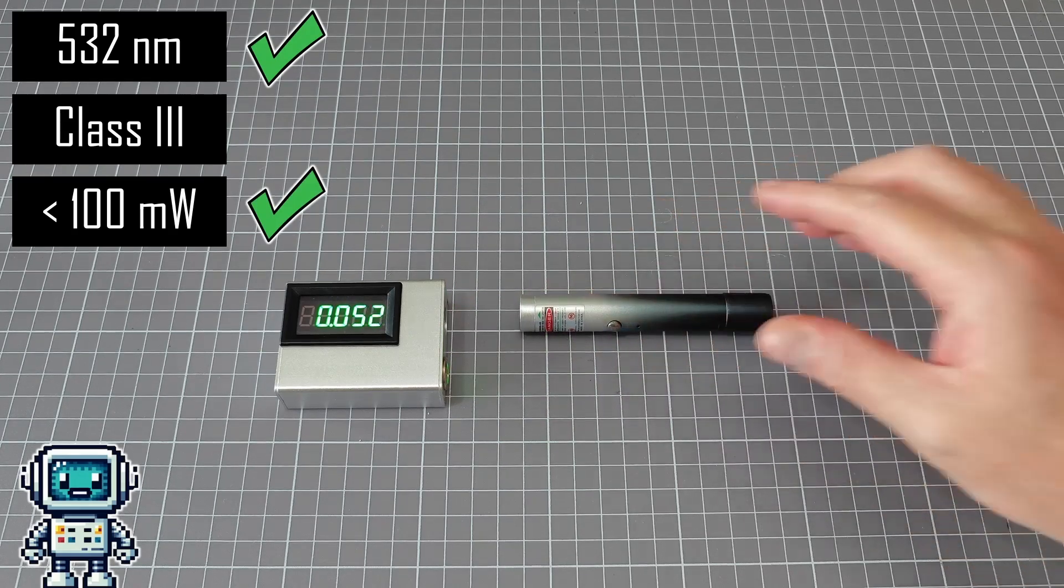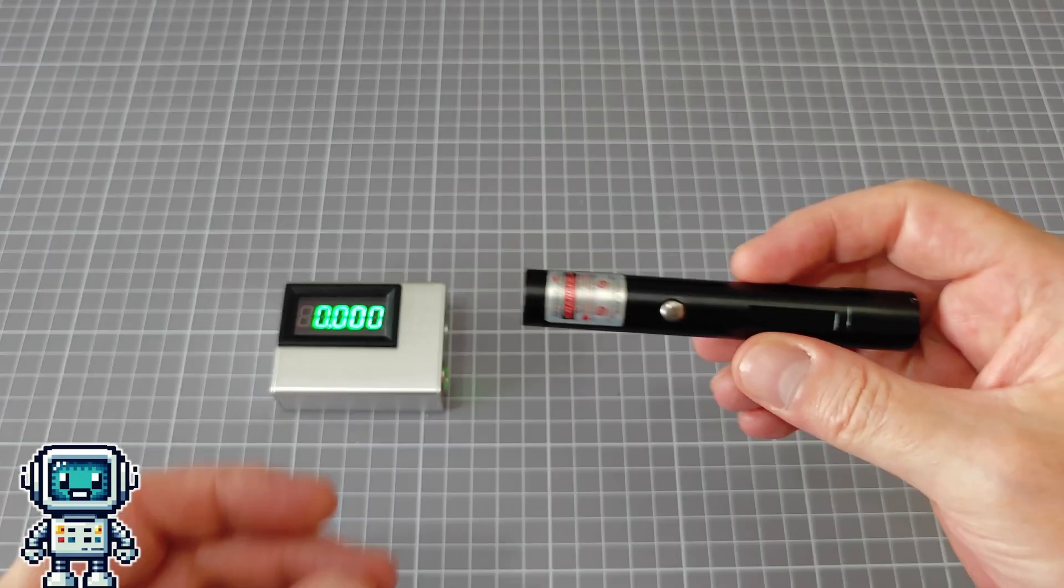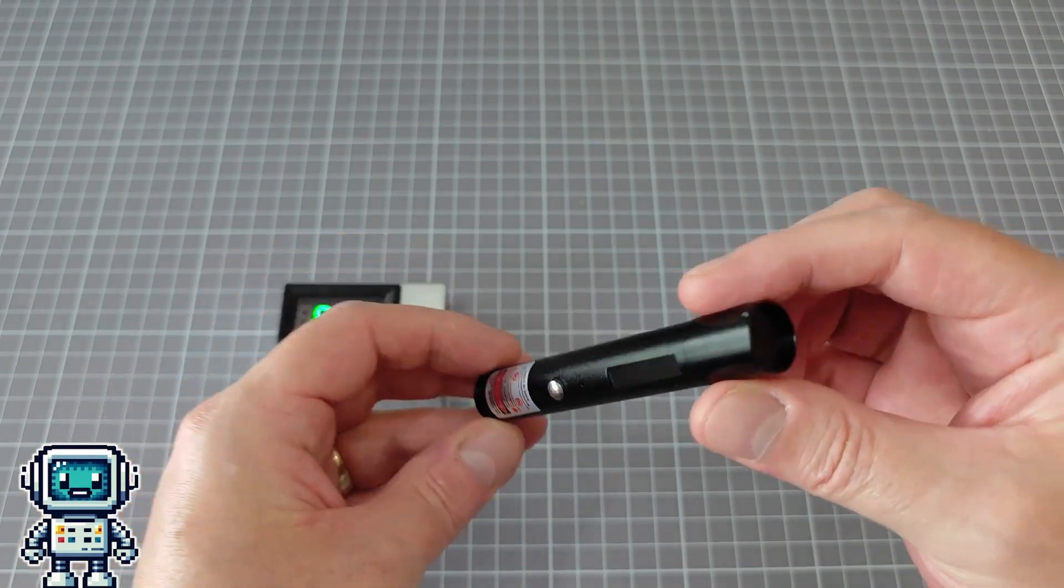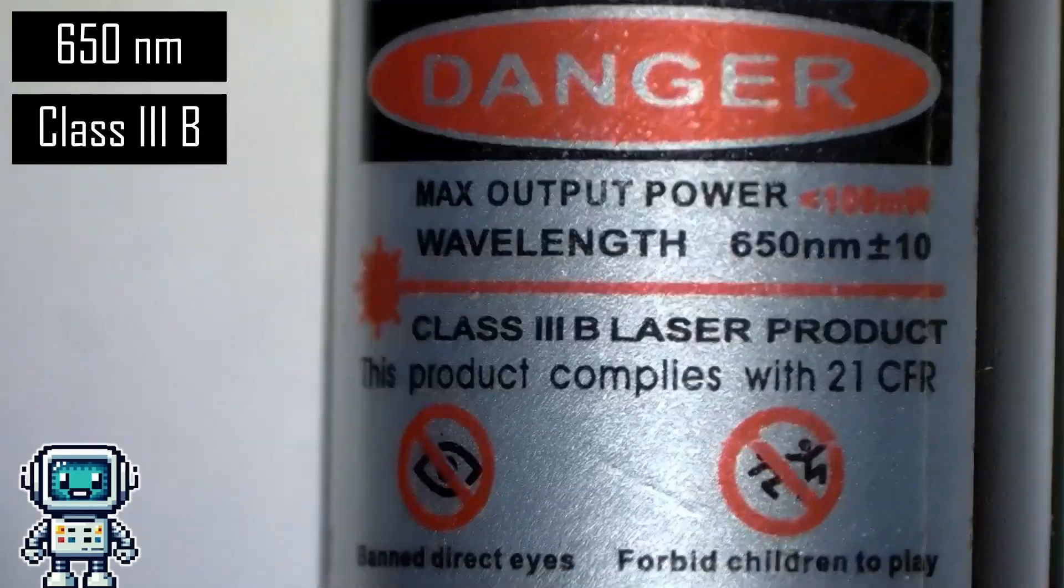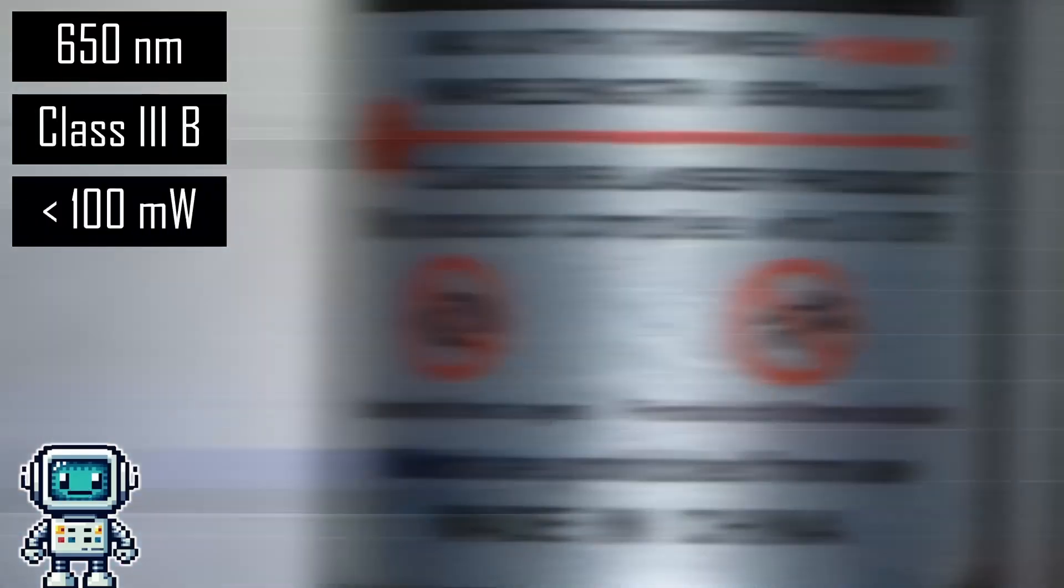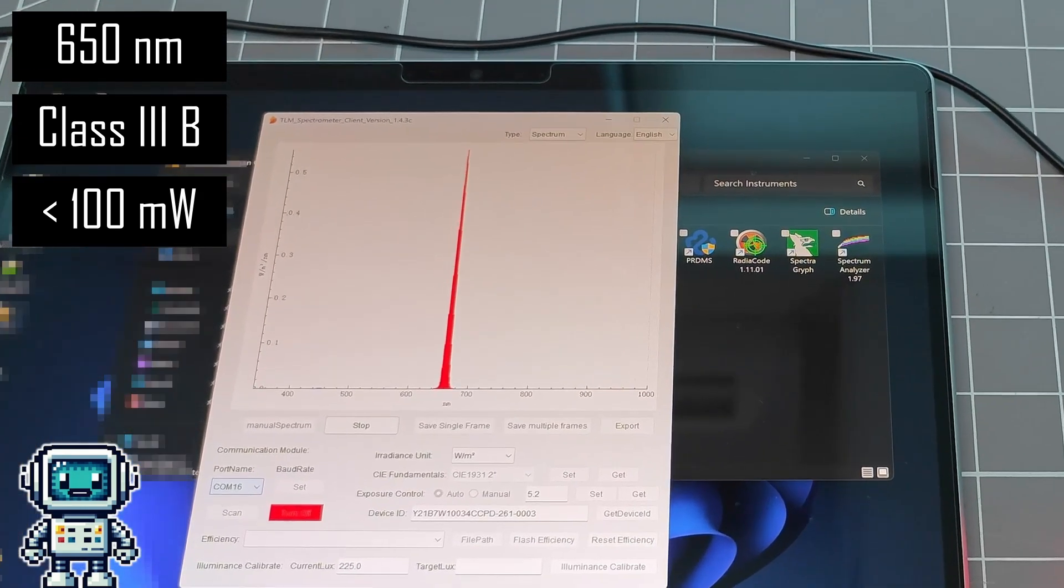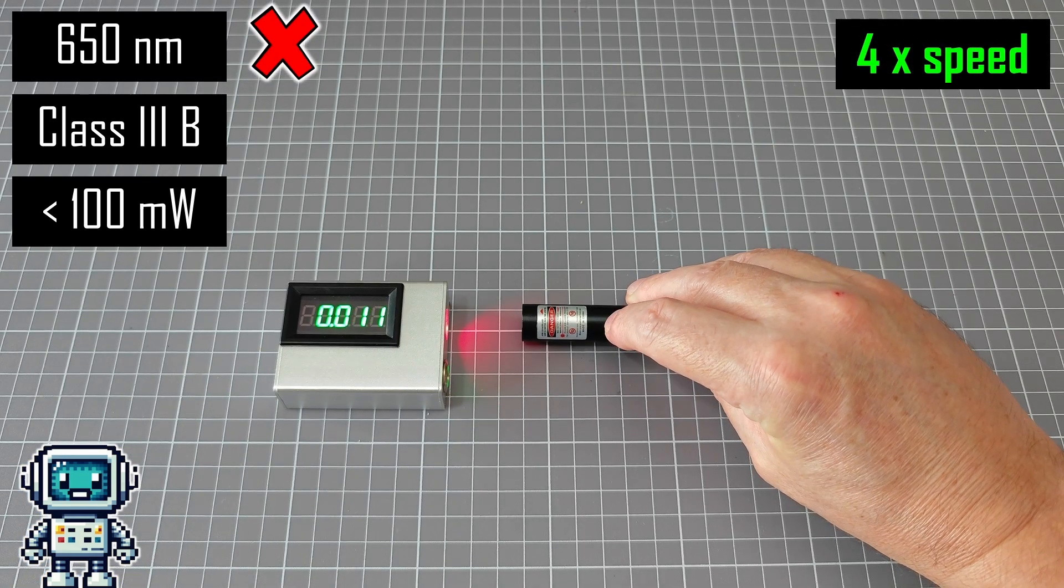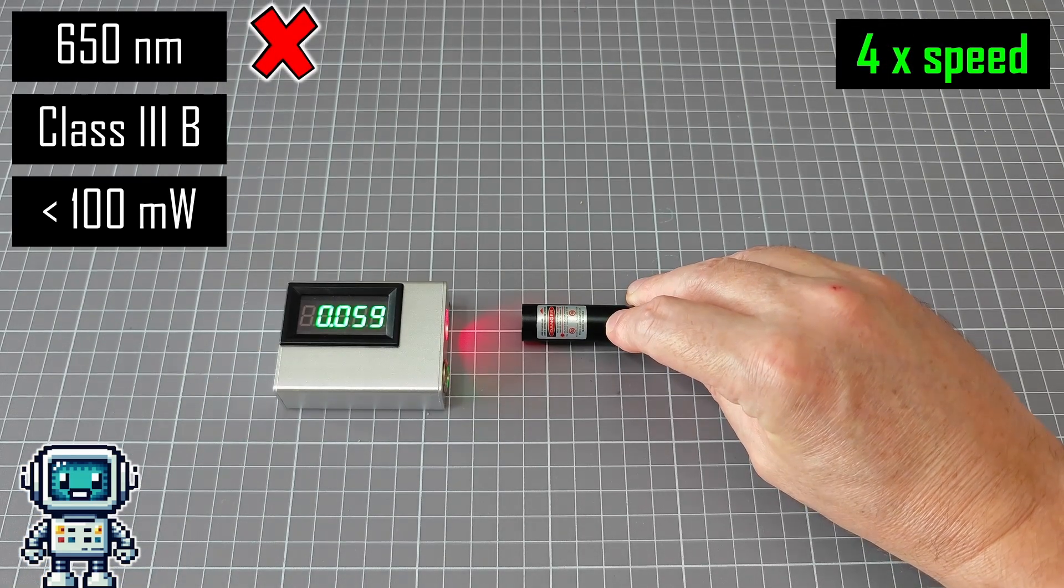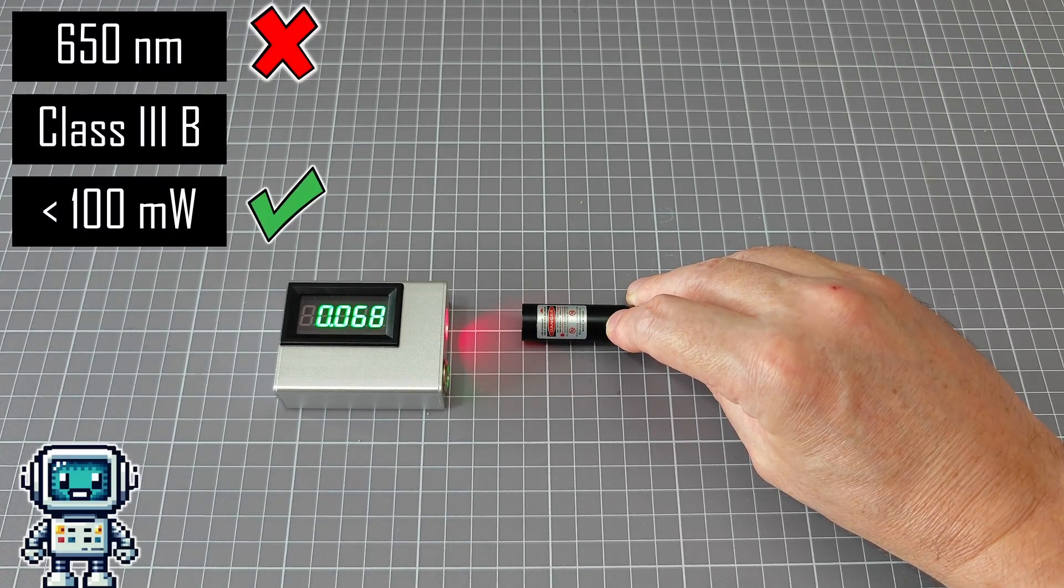Which actually makes it a Class IIIB laser. This is a red laser pointer which claims to be a 650 nanometer Class IIIB device with a power output under 100 milliwatts. Using the spectrometer, we see that the wavelength is incorrect, the measured value is actually 660 nanometers. After the power measurement stabilizes, we get a level of 68 milliwatts for this laser. This agrees with the device label and the stated class.